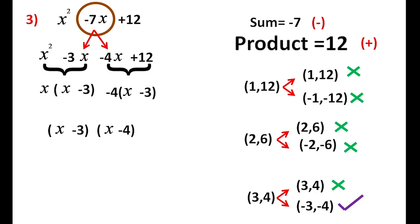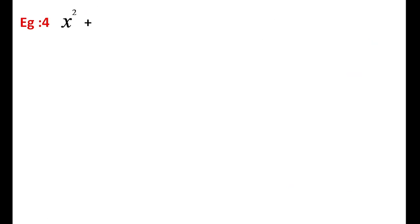So we got two factors. In the first example, both sum and product were positive. In the second example, both sum and product were negative. In this third example, sum is negative and the product is positive. Going to the last example: x² + x - 12. Here the middle term is +x, so the sum is 1 (positive), and the product is -12 (negative).